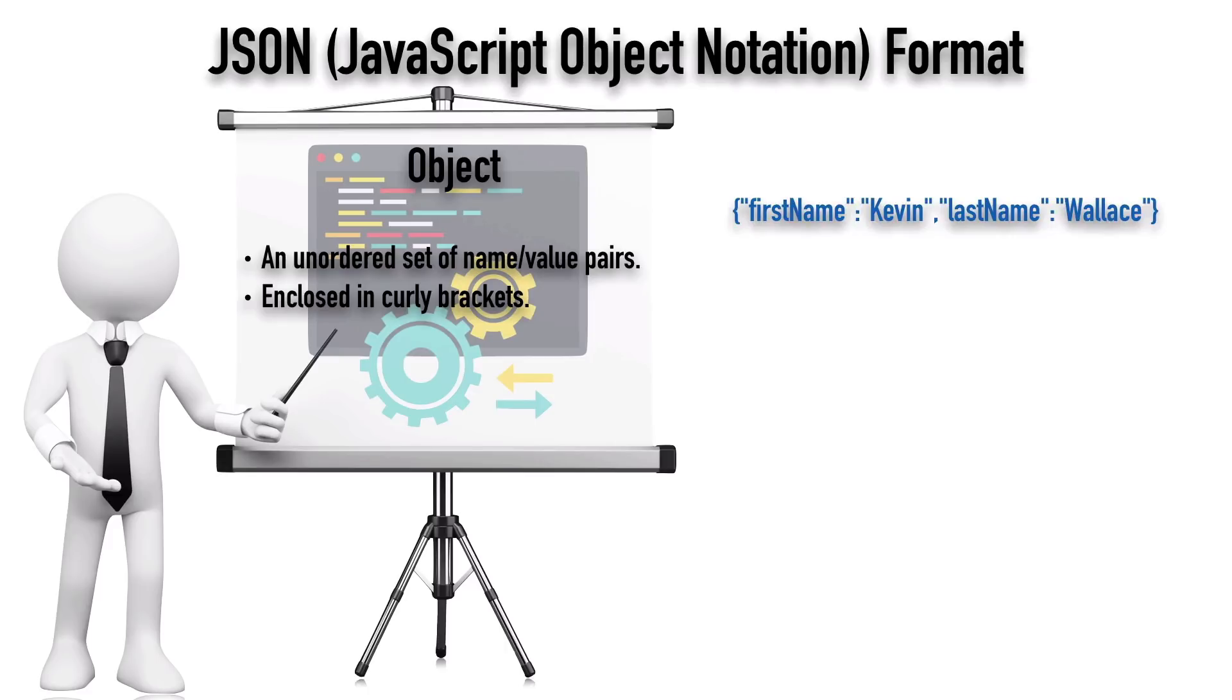However, you typically don't see it written like this. Typically you see lots more whitespace to make it easier to read. With whitespace, we have opening and closing brackets on their own lines, and inside those brackets we have the contents. Notice that each name-value pair is on its own line.